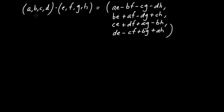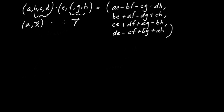With that in mind, let me take the vector part of this first quaternion and call it the vector x. And let me take the vector part of the second quaternion and give it the name y. So I could rewrite this first quaternion (A, B, C, D) as the scalar part A joined with the three-vector x, and the second quaternion as some scalar E joined with a three-vector called y.